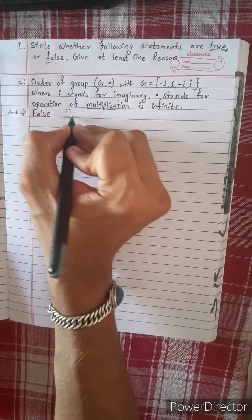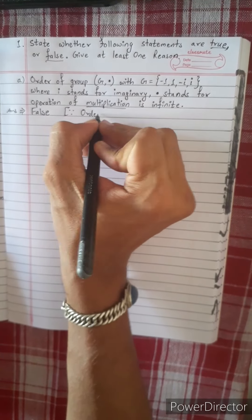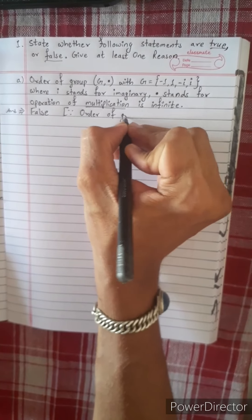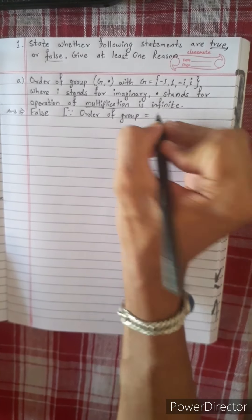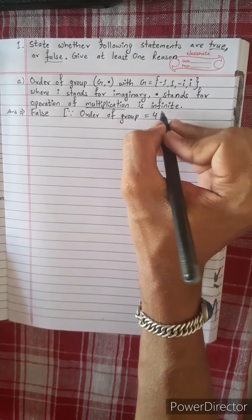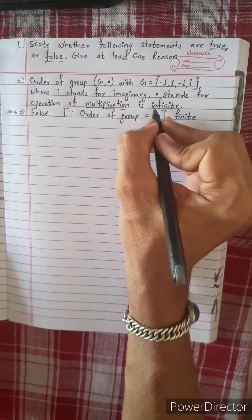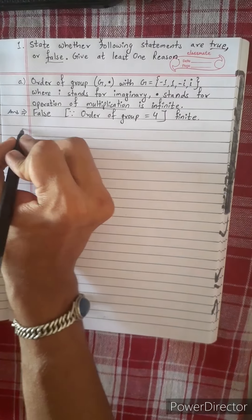Once you have written false, order of the group. Order of the group is equal to 1, 2, 3, 4. This is finite and we have to find infinite and we have to find the V number.